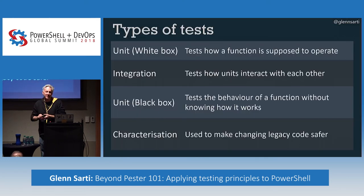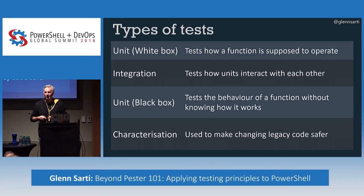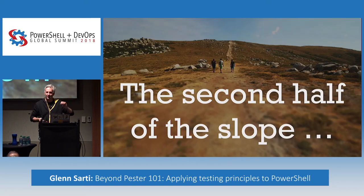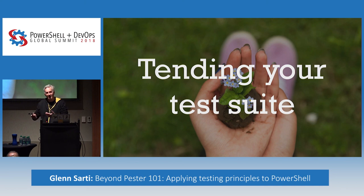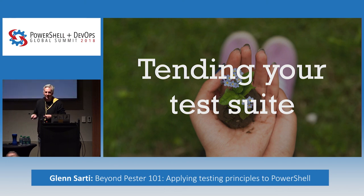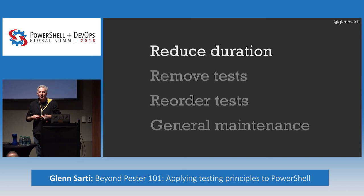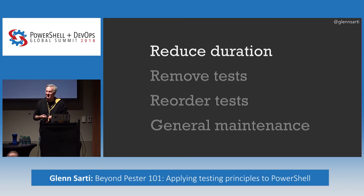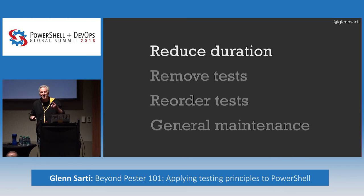Now it's time for the second half: maintaining your tests. It's not enough just to have good tests — they need to be tended for and cared for as much as your PowerShell code. As you add more code and more tests, it's good practice to periodically go through your test suite and make sure it's giving you the value you want. First: you can reduce how long it takes to run your tests. The SQL Server DSC resource has about 3,000 tests and takes 50 minutes to run — that's a really long time. We should look at ways to speed that up. You can get a bigger computer, but there might be a better way.